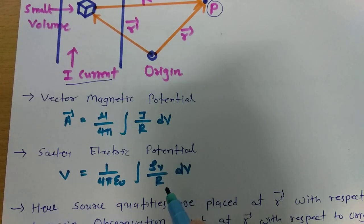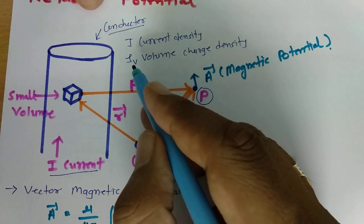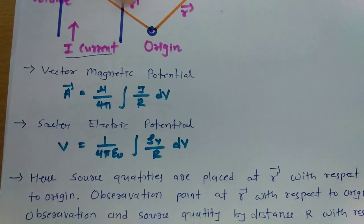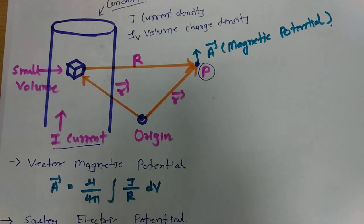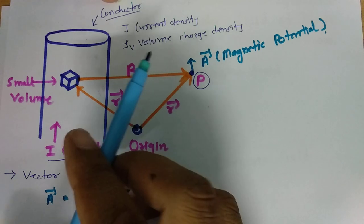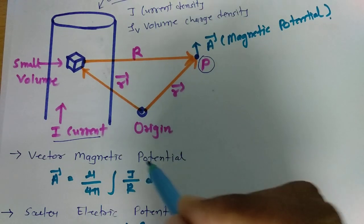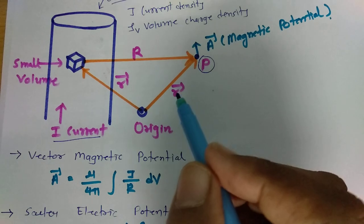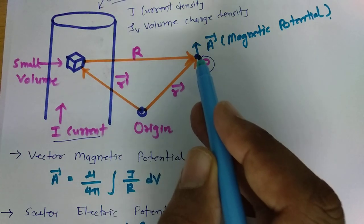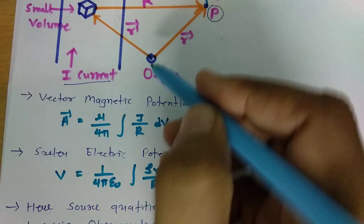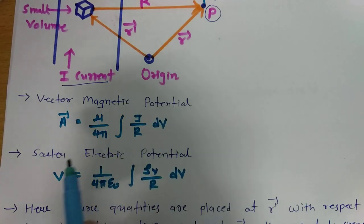One can write it as 1/4πε₀ times Q/R. But as I mentioned, we have data in terms of current density J and volume charge density ρv. So instead of writing charge, we should write ρv. As current flows in this direction, current density is J and volume charge density is ρv. Vector magnetic potential A = μ/4π volume integration of J/R, and scalar electric potential V = 1/4πε₀ volume integration of ρv/R. That is how we calculate vector magnetic potential and scalar electric potential.